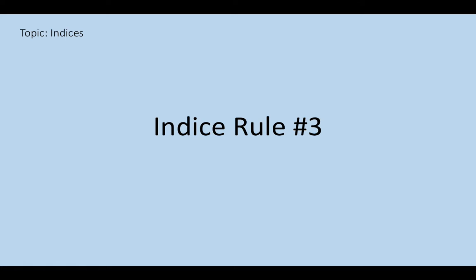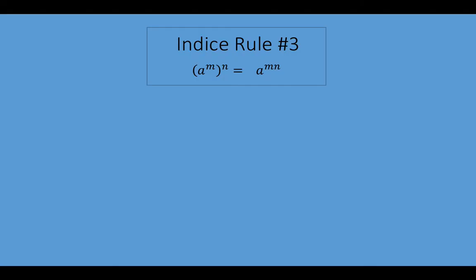Hi, welcome to Indices Lesson 3. Today we're going to look at Indice Rule number 3, which asks the question: what happens when a power is itself raised to a power? We're going to consider a to the power of m all raised to the power of n, and the suggestion is that it becomes a to the power of m multiplied by n. Well, let's see if we can prove that.